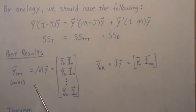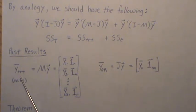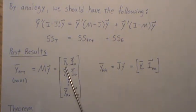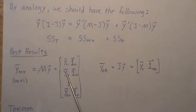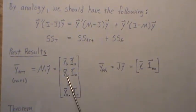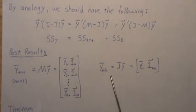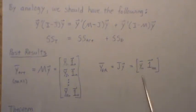From a previous video, we showed that the vector of treatment means can be represented by MY, where there are n_1 components equal to the treatment mean for group 1, n_2 components equal to the treatment mean for group 2, etc. The overall grand mean was represented by JY — a constant vector of the total grand mean, the mean of all the Y's.